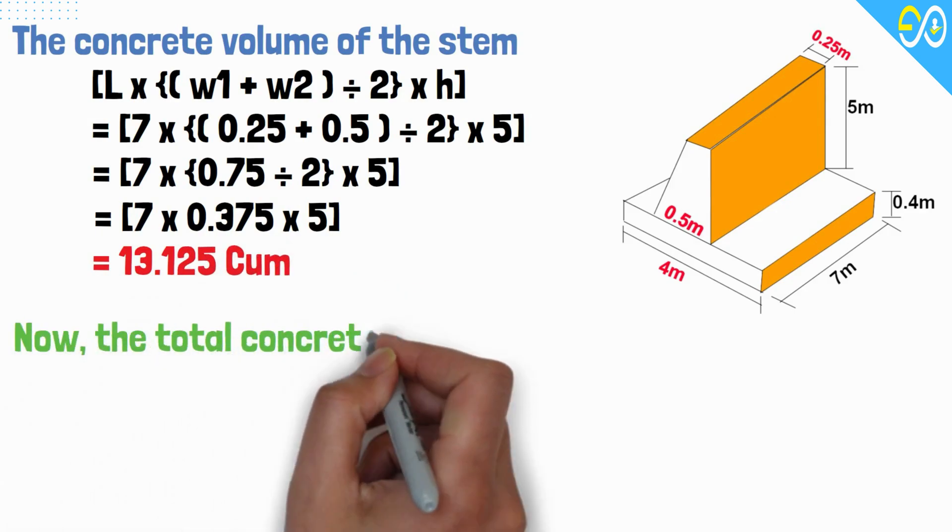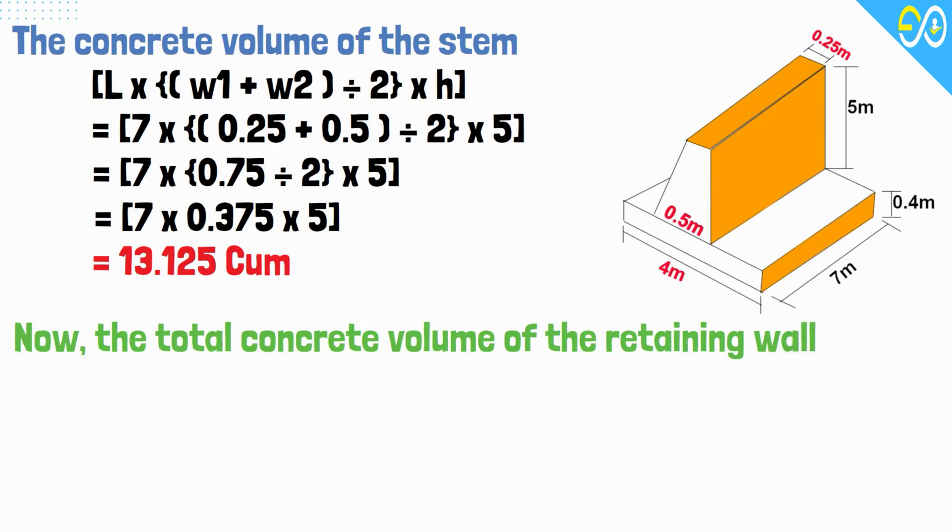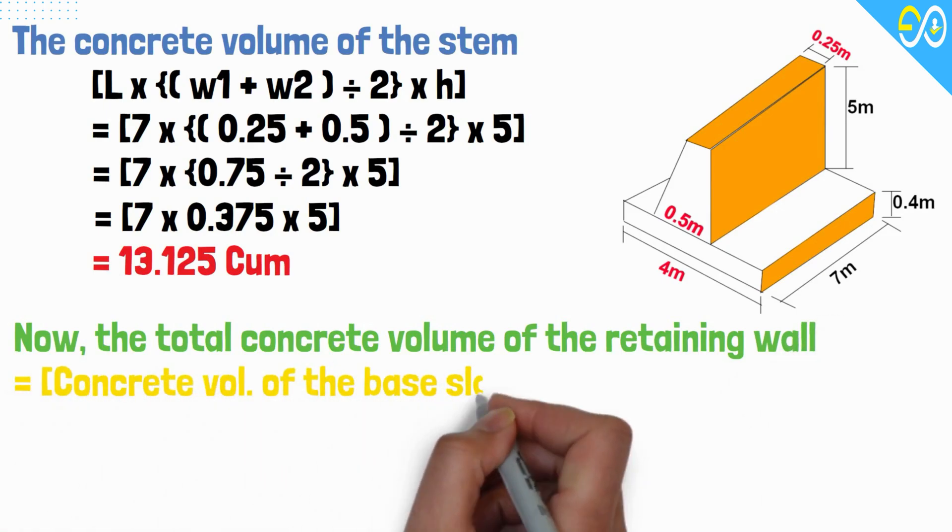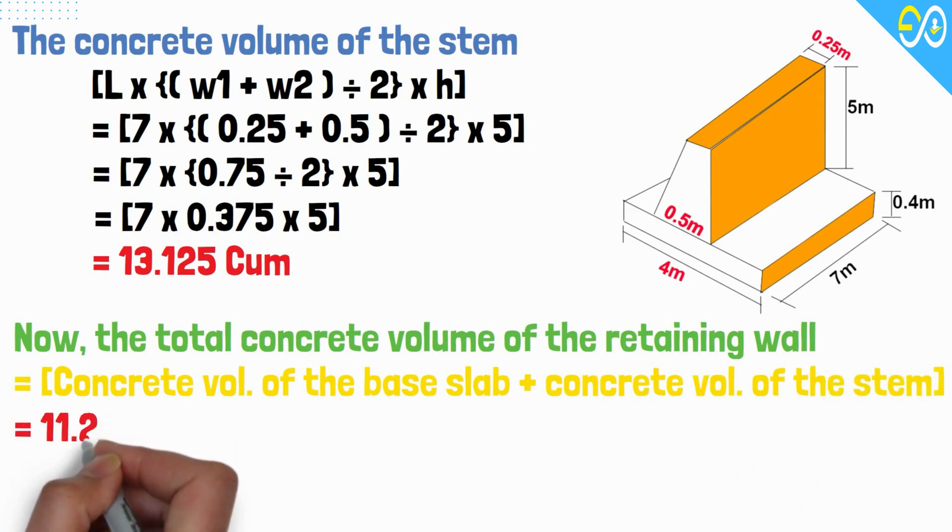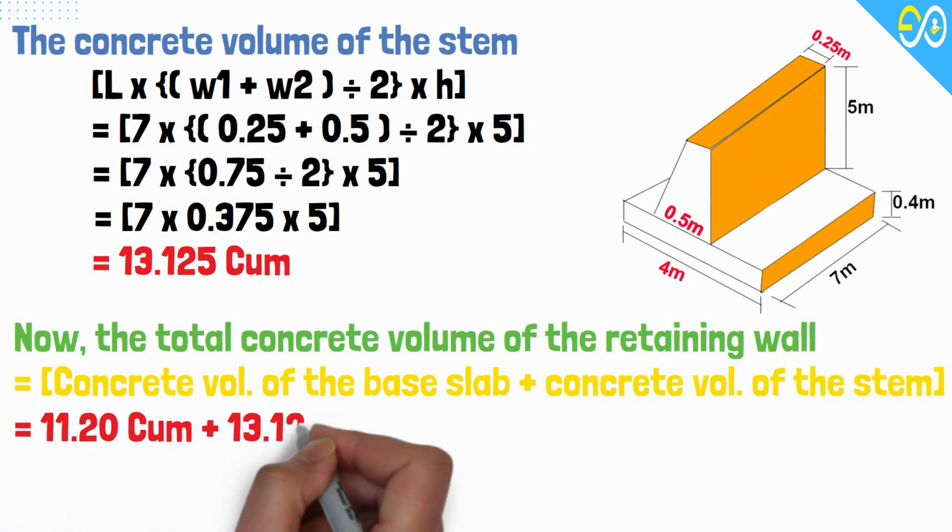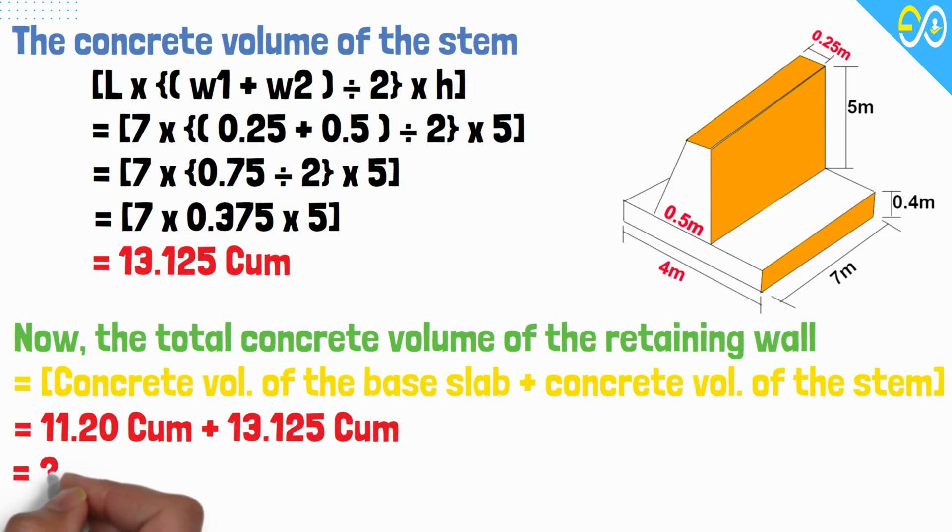Now, the total concrete volume of the retaining wall equals concrete volume of the base slab plus concrete volume of the stem, equals 11.20 plus 13.125 equals 24.325 cubic meters.